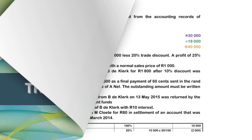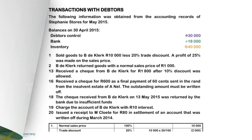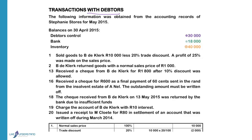Good morning. Today we will focus on transactions with debtors. They provide balances at the end of April for the Debtors Control, Bank, and Inventory, and then transactions in May. The balances will appear on the debit side of the ledger accounts because debtors, bank, and inventory are all assets, and assets always have debit balances.